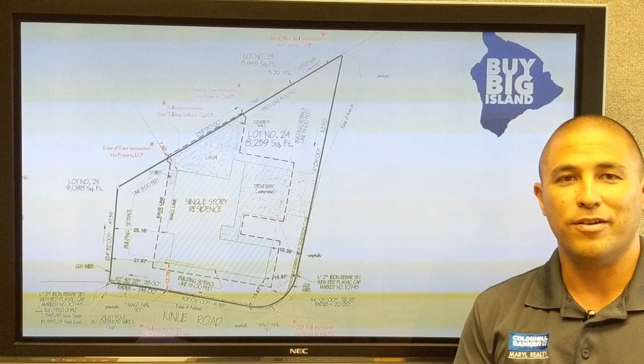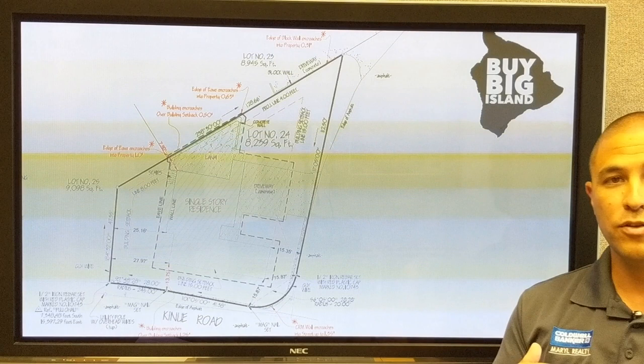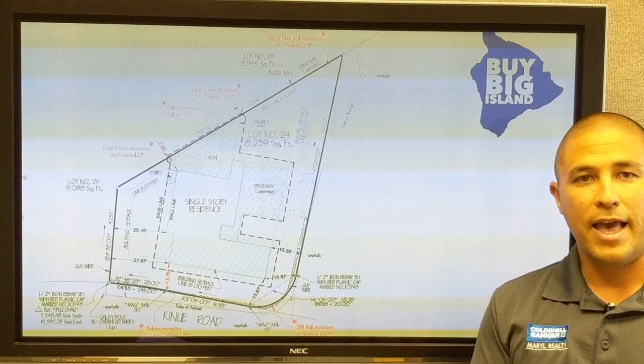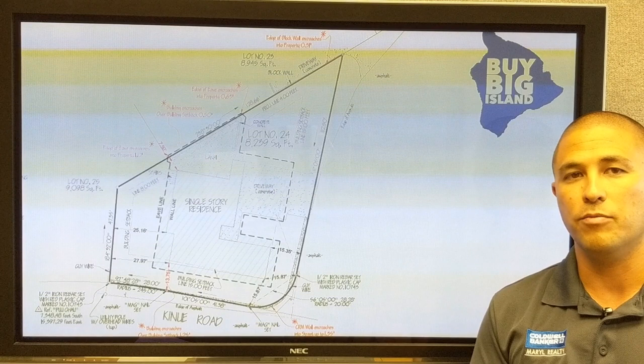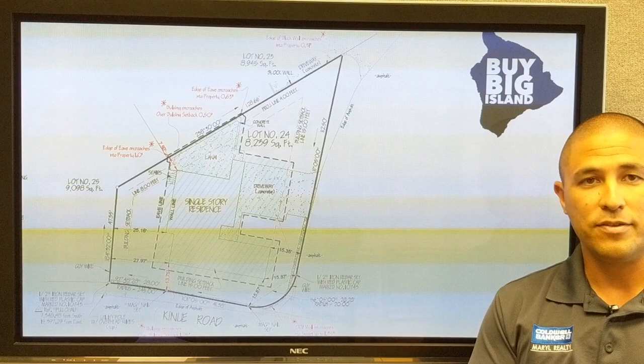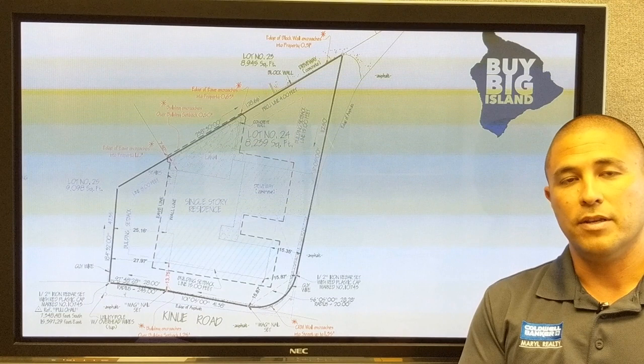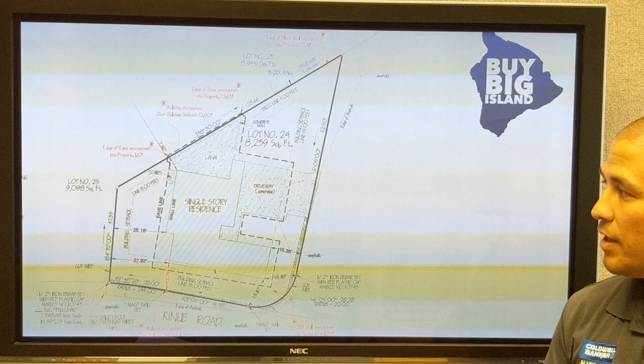If for some reason you don't do a staking or a survey — this happens a lot with small vacant land in Ocean View or down South where there's a lot of vacant land and you don't see the need — that's possible. You don't have to do one in the purchase contract, but both buyer and seller will have to sign a waiver stating they've been advised to do a staking or survey, decided not to, and hold the real estate companies harmless for moving forward without one.